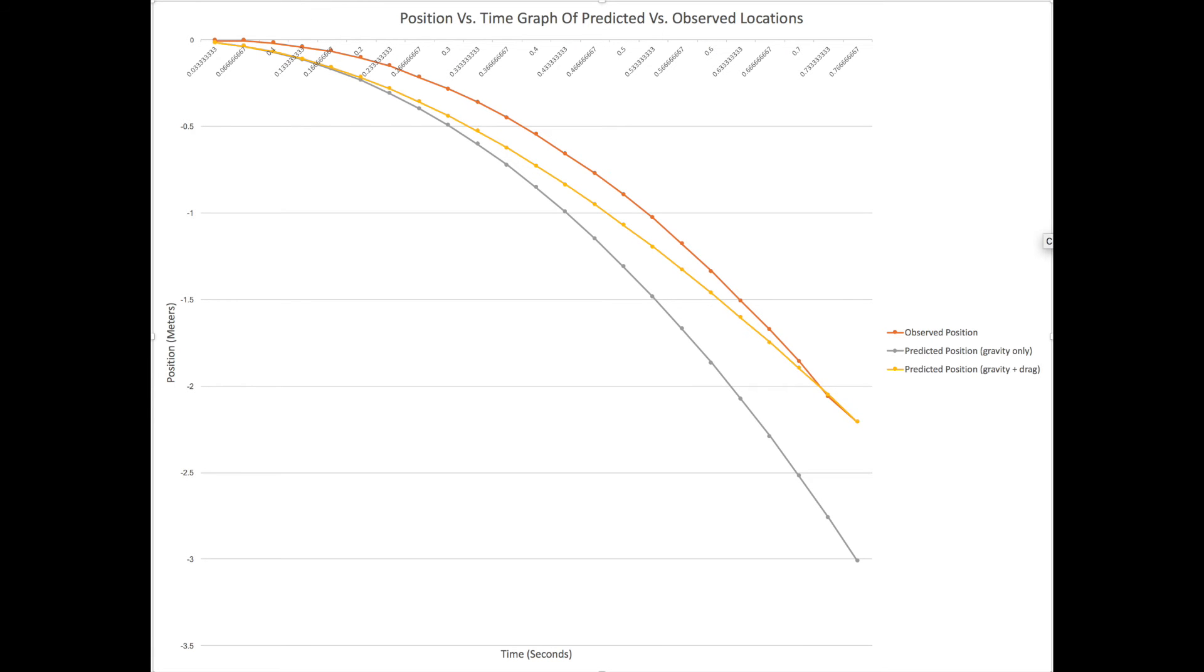With the data and models we produced, we can create a position versus time graph to show the three values. In doing this, we can now accurately see the degree to which the effect of drag force has on the change in the position of the ball. Although we may not even need the drag force included in the line graph to show the discrepancy, as we could just use the observed and predicted with no drag, it shows that there are minute changes in our surroundings that influence the path of the ball.